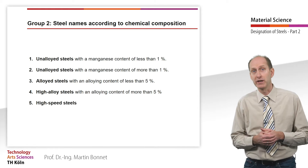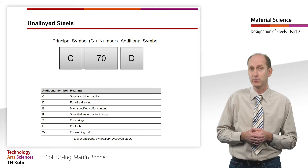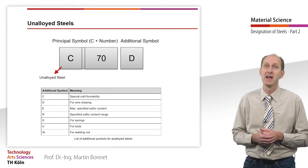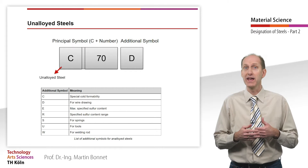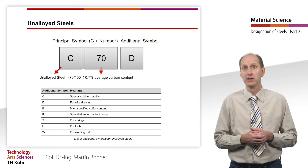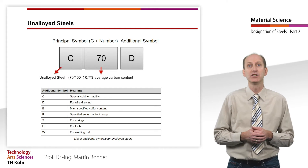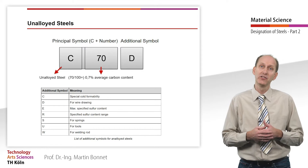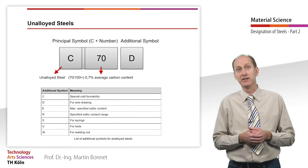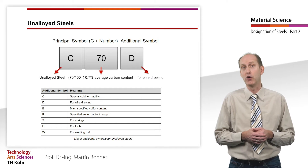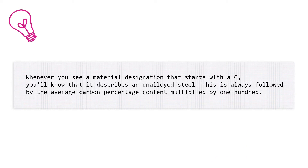Let's start with subcategory 1 of unalloyed steels with a manganese content of less than 1%. The principal symbols are C for carbon and a number that equals the average carbon percentage content multiplied by 100. The additional symbols indicate the application or the sulphur content. Accordingly, C70D designates an unalloyed steel with an average carbon content of 0.7% used for wire drawing. Whenever you see a material designation that starts with a C, you will know that it describes an unalloyed steel, always followed by the average carbon percentage content multiplied by 100.